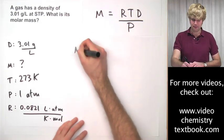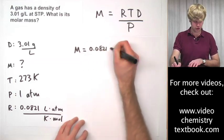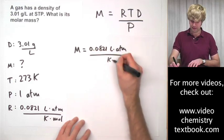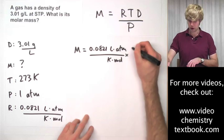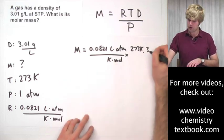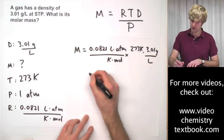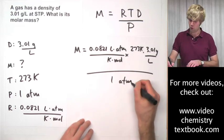So M equals RTD divided by P: 0.0821 liters ATM per Kelvin moles times temperature, 273 Kelvin, times density, 3.01 grams per liter, all of that divided by pressure, one ATM.